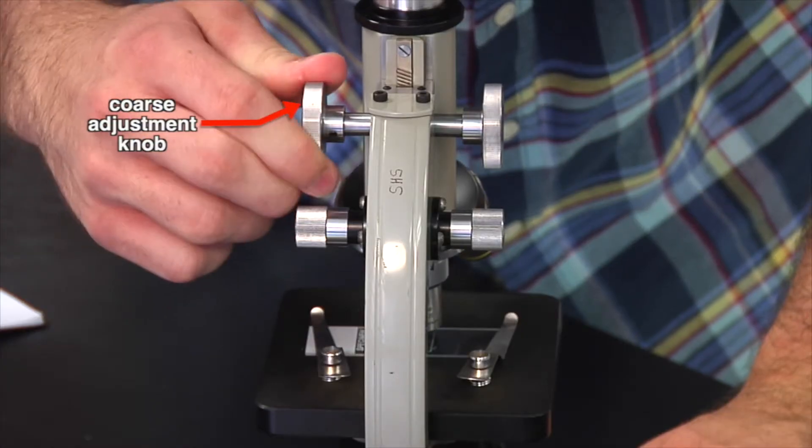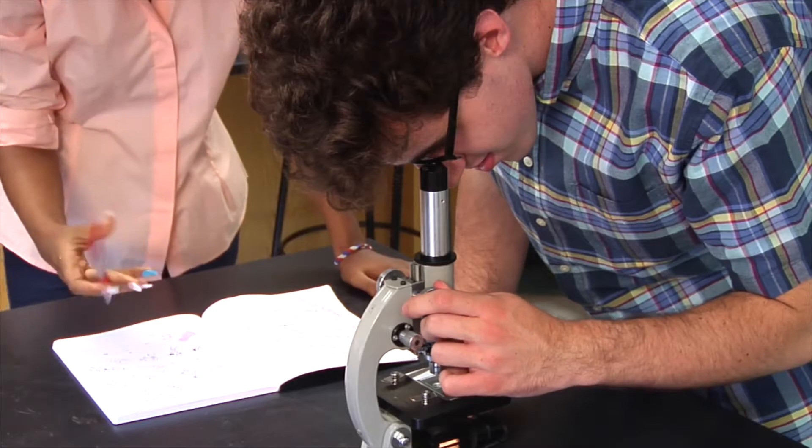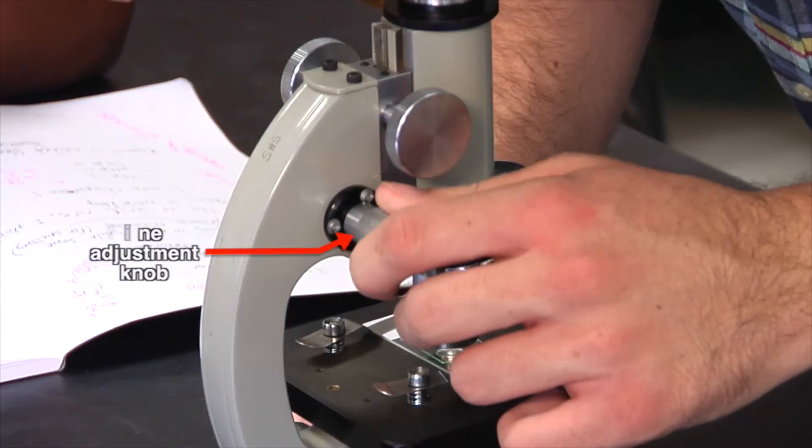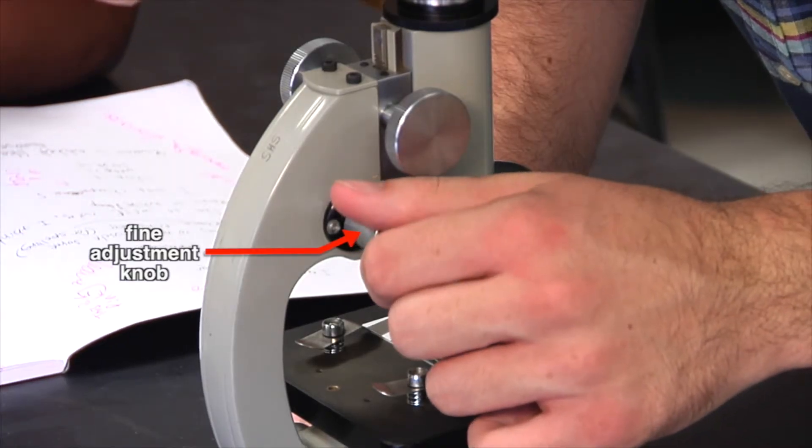Look through the eyepiece and use the coarse adjustment knob. Continue the adjustment until you see the specimen through the eyepiece. Now use the fine adjustment knob to be able to view the specimen more clearly.